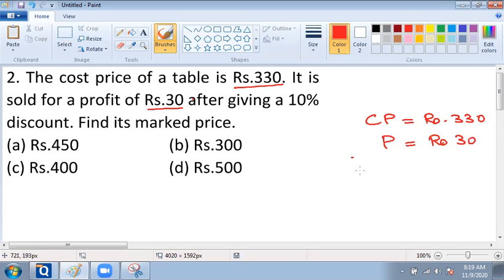It means that the selling price of this table is equal to Rs. 330 plus Rs. 30, that is equal to Rs. 360.